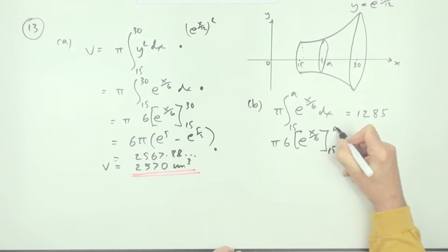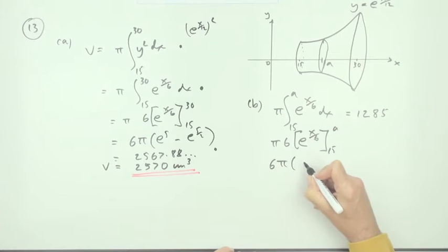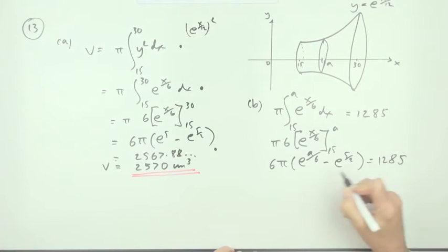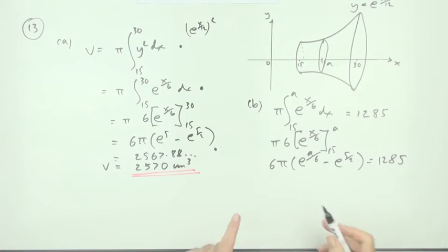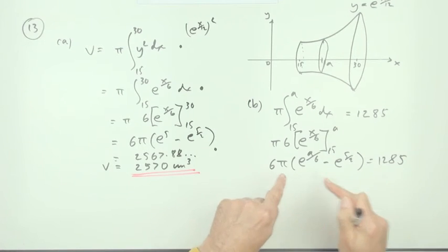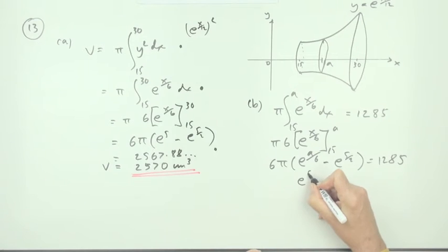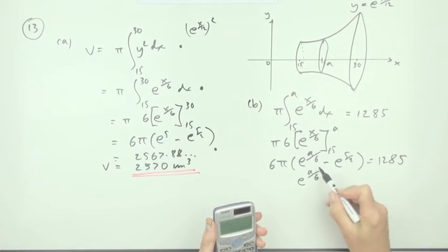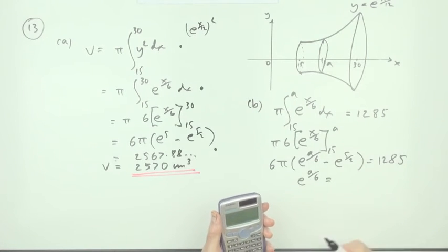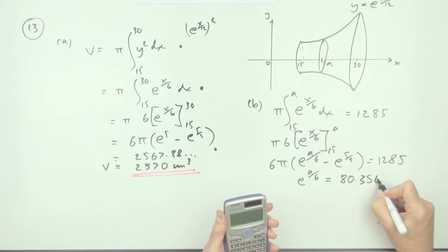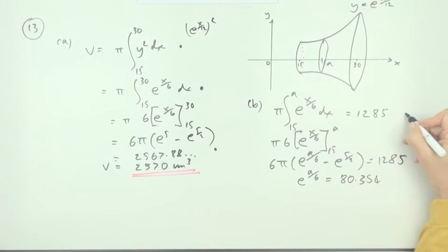So you've got 6 pi times e to the a upon 6 minus e to the 5 upon 2 equals 1285. There's only the one unknown, so I'm going to do this all in one go. So e to the a upon 6 will be, dividing by 6 pi and then adding on e to the 5 upon 2, gives 80.354.